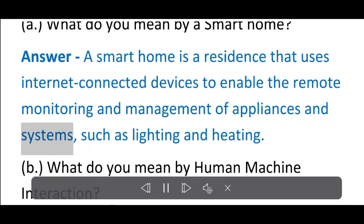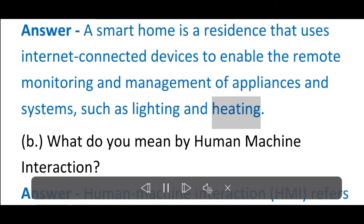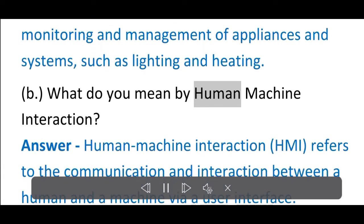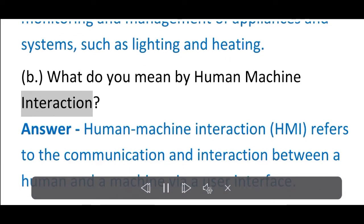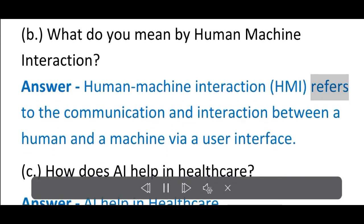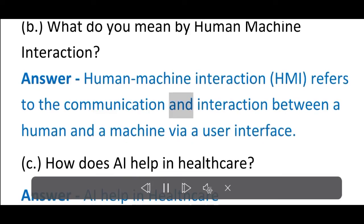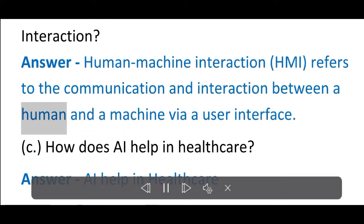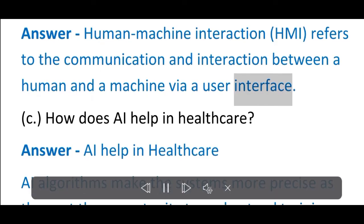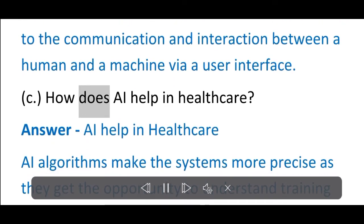B. What do you mean by human machine interaction? Answer: Human machine interaction refers to the communication and interaction between a human and a machine via user interface. C. How does AI help in healthcare?